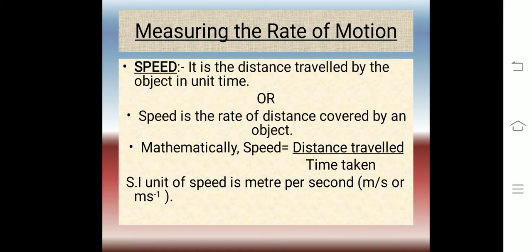How do we define speed? Speed is the distance travelled by the object in unit time, or speed is the rate of distance covered by an object. Mathematically, speed is equal to distance travelled divided by time taken.